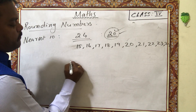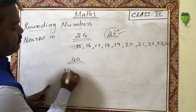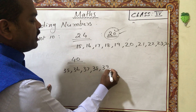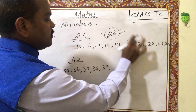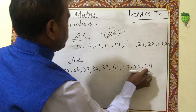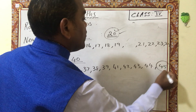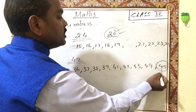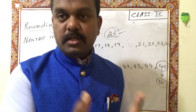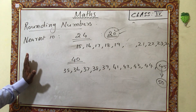Another example: numbers that round to 40. From 35 to 44 round to 40 — that is 35, 36, 37, 38, 39, 40, 41, 42, 43, and 44. If the number is 45, it will not round to 40 but to 50, because 45 is half and the rule says half and more than half rounds up to the next number.